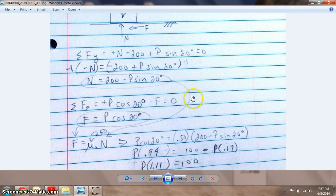That's all equal to zero because we know it's a statics problem, we're in equilibrium. So we solve for F. When we do that, we find we can't get any simpler than this: F is equal to P times cosine of 20 degrees.